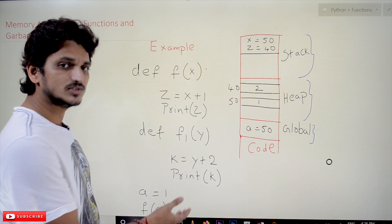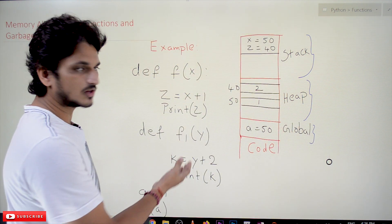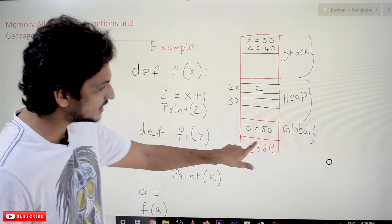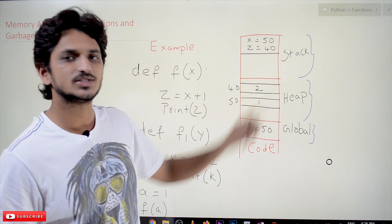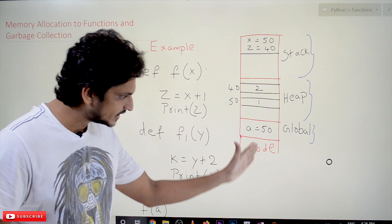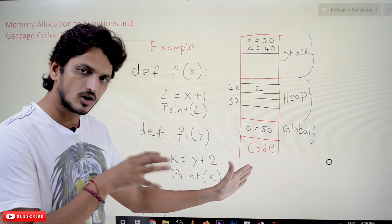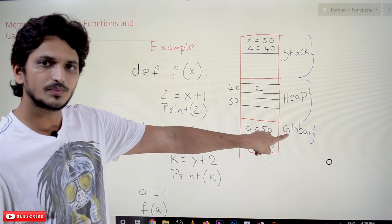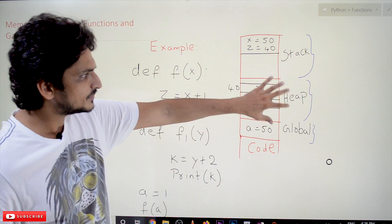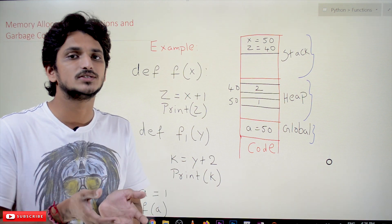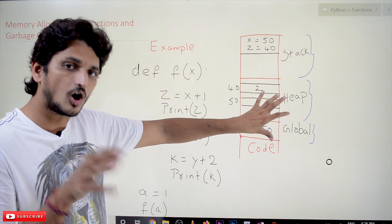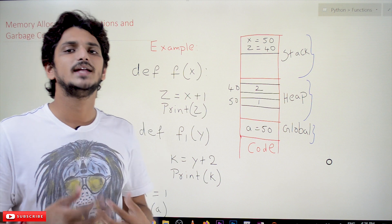In order to execute a program in Python, it will assign some space in the random access memory. In the RAM it will assign code space, global space, heap space, and stack space. Code is converted into machine level language and saved in the code space. Global variables are maintained in the global space. Heap space is used to maintain the objects defined in the program. Stack space is used to maintain the functions.